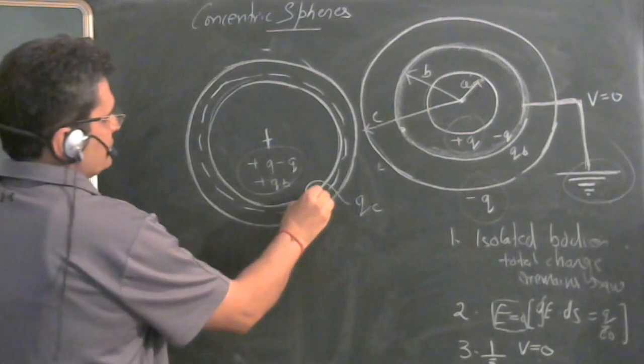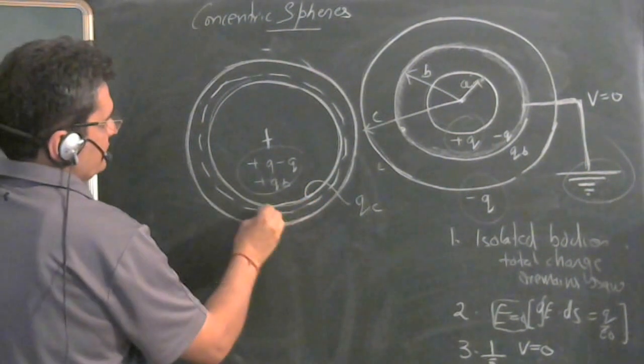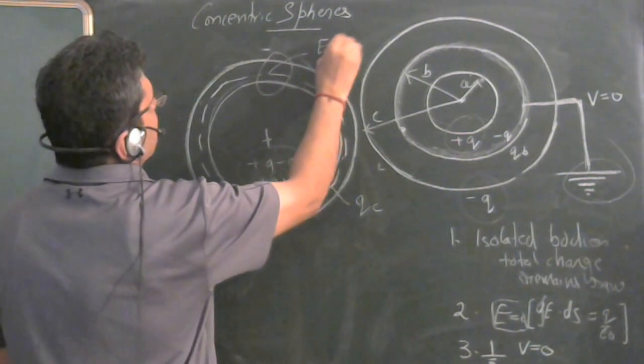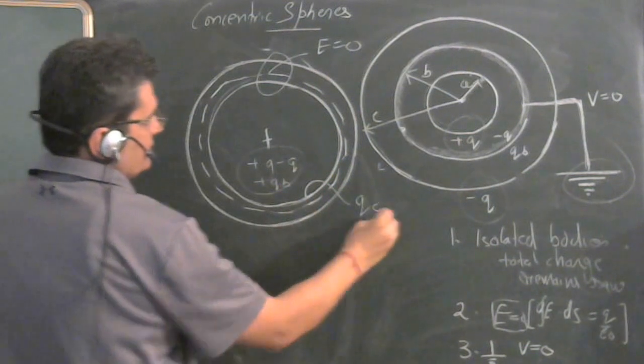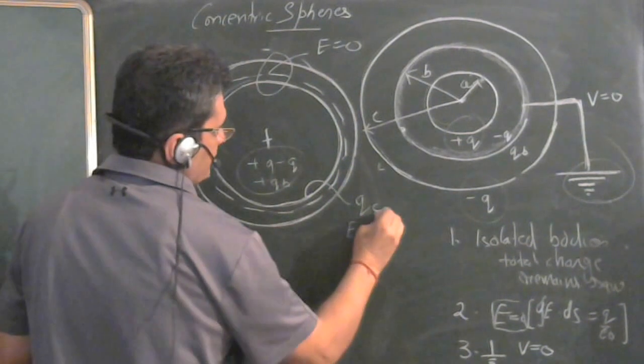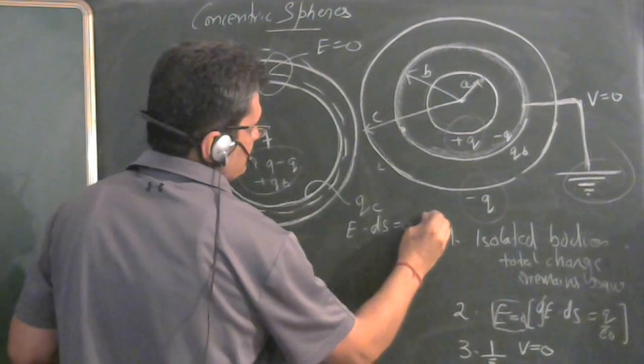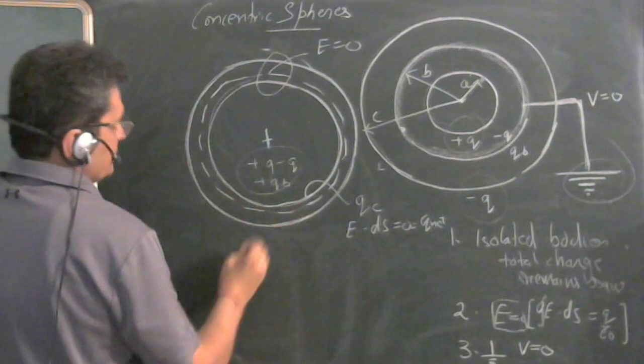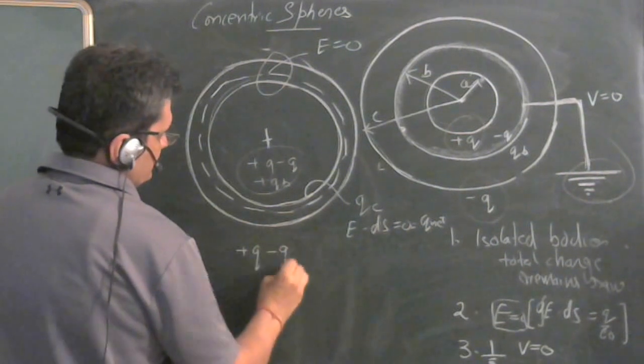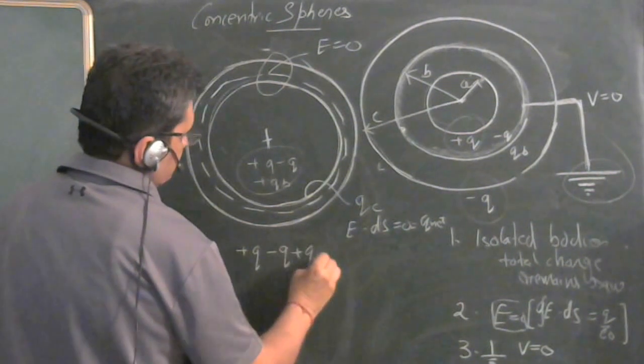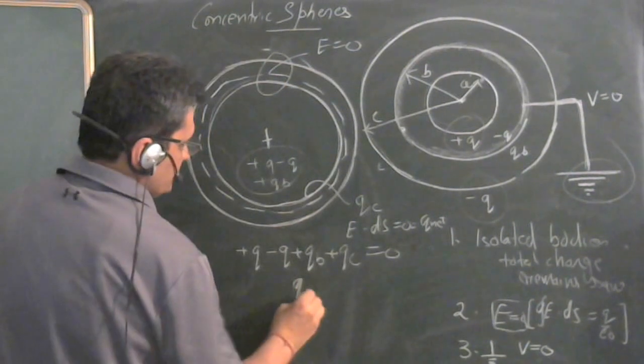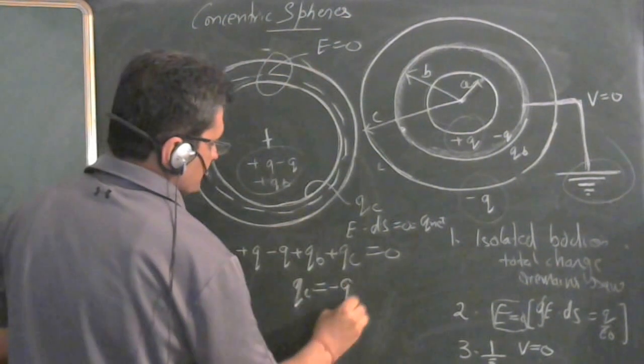And what will be this QC? Take a Gaussian surface. Electric field inside this conductor is zero. So E dot DS is equal to zero means Q net is zero. So what is Q net? Plus Q, minus Q, plus QB, plus QC is equal to zero. So QC is equal to minus QB.